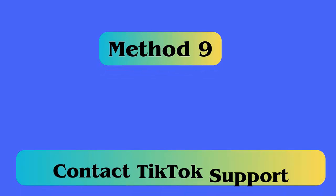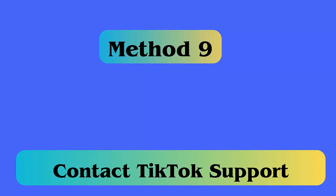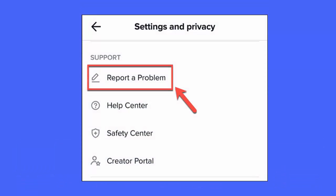Method 9: Contact TikTok Support. Follow these steps: open TikTok and go to your profile, click on the menu icon, choose Settings and Privacy, scroll down and choose Report a Problem, then choose Submit a Report and explain the issue.